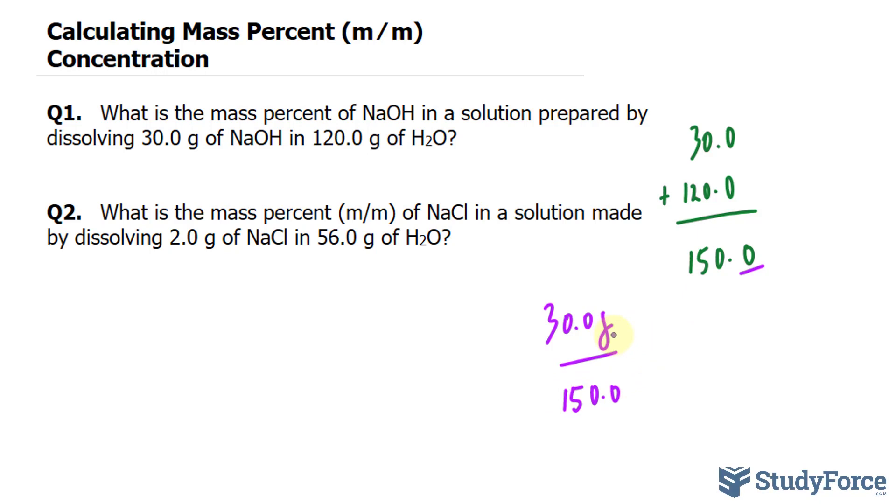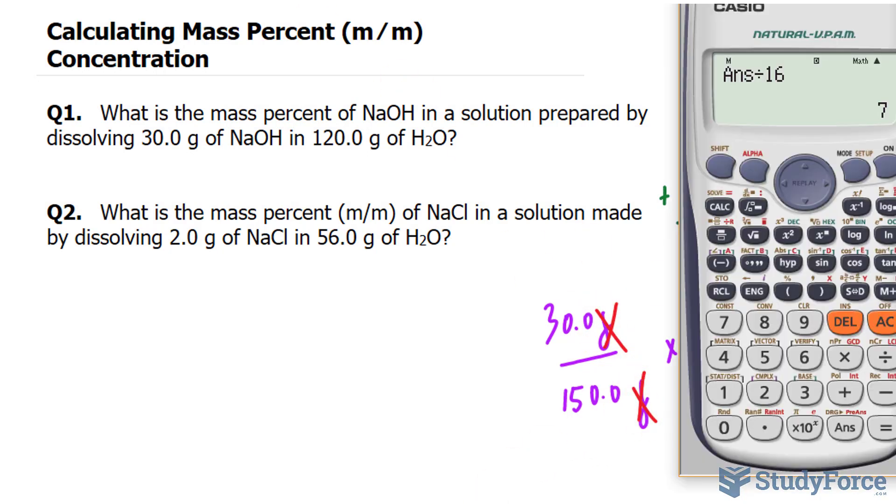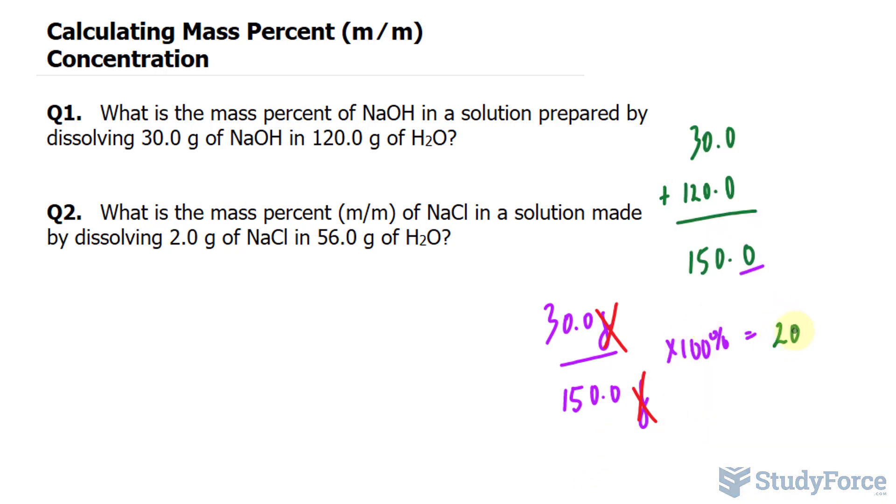Since this is a percentage, whatever answer we get, we multiply by 100%. So the units will cancel out as expected. 30 divided by 150, now we multiply this by 100, and we end up with 20%. We want this to three significant figures, and that's our final answer.